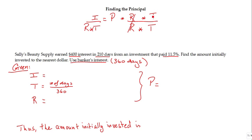And this way is going to cancel, and the principle is equal to interest divided by rate multiplied by time. So here is the formula for the principle.